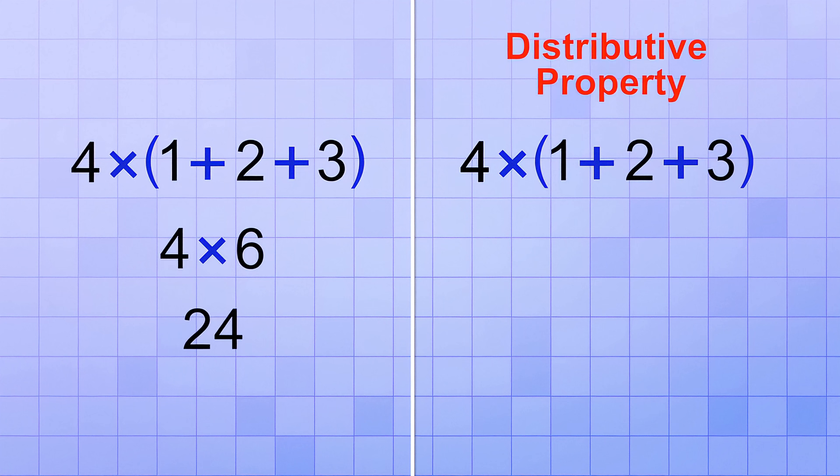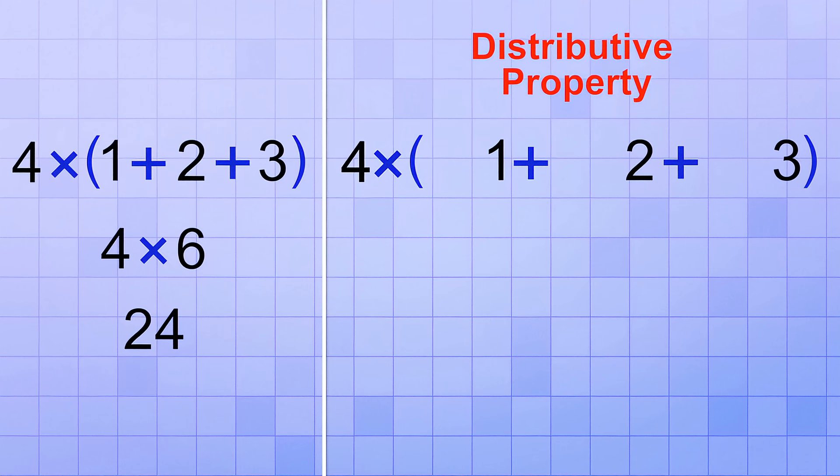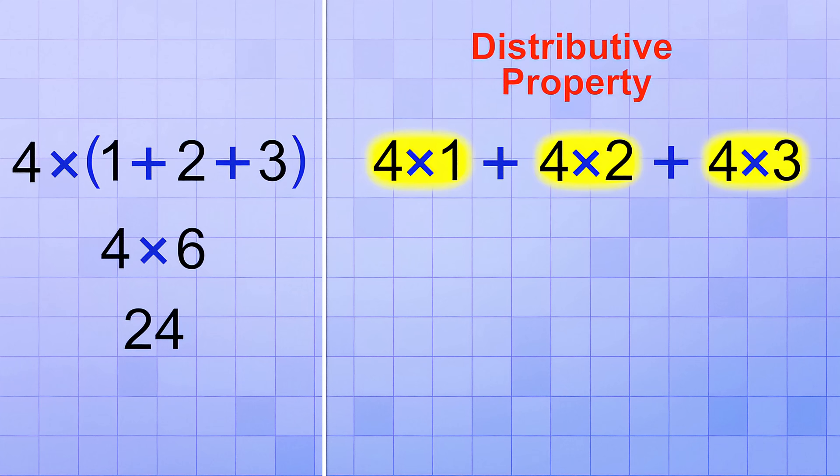Now, let's use the Distributive Property. We distribute a factor of 4 to each member of the group, which makes the group go away and allows us to do those multiplications individually. 4 times 1 is 4, 4 times 2 is 8, and 4 times 3 is 12. Finally, we add up those three individual answers. 4 plus 8 is 12, and 12 plus 12 is 24.